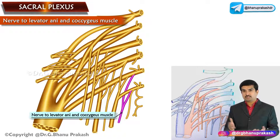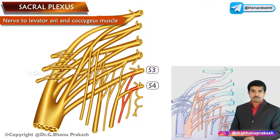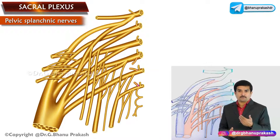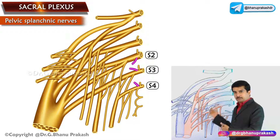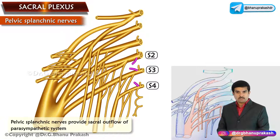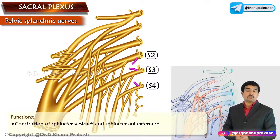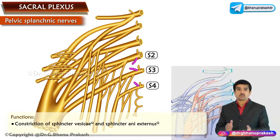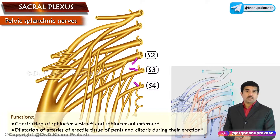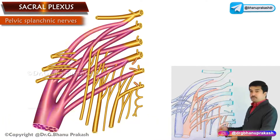The nerve to levator ani and coccygeus muscle is formed from ventral divisions of S3 and S4. The pelvic splanchnic nerves arise from S2, S3, and S4; they provide the sacral outflow of the parasympathetic system, causing constriction of the sphincter vesicae and sphincter ani externus, and dilatation of arteries of erectile tissue of the penis and clitoris during erection.